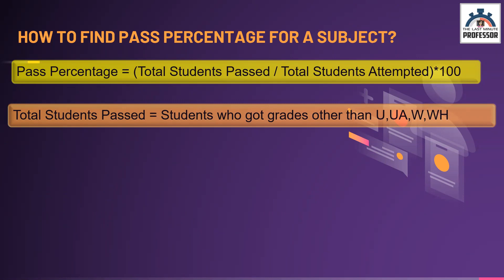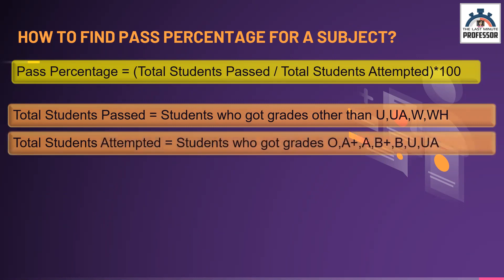Now let us see the denominator — it is total students attempted. This means the students who have obtained the grades O, A plus, A, B plus, B, U, or UA. Uninformed absence also falls under this category, as it also indicates the student has attempted and failed.